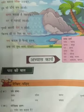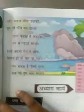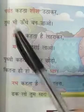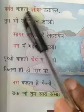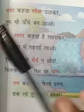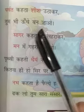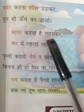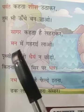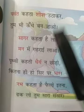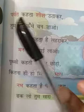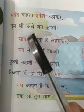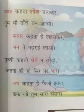Come to page number 23 and keep your fingers on the first line. 'Parvat kehta sheesh utha kar, tum bhi unche ban jao. Sagar kehta hai lehrakar, man mein gehrai lao. Parvat kehta sheesh utha kar, tum bhi unche ban jao.'